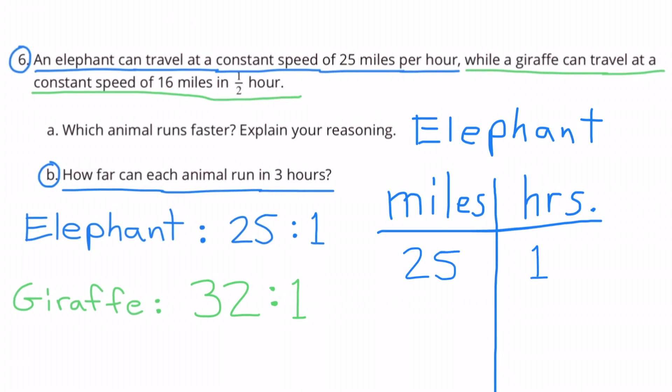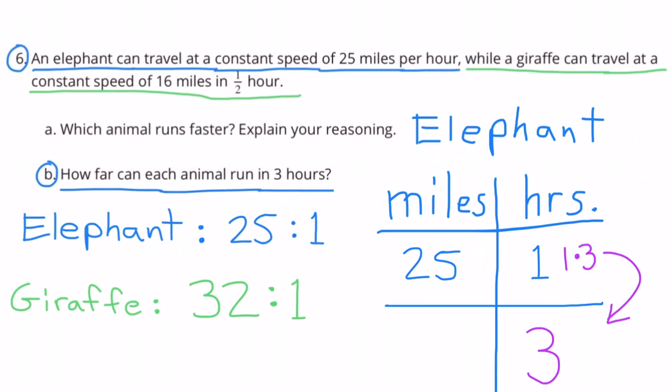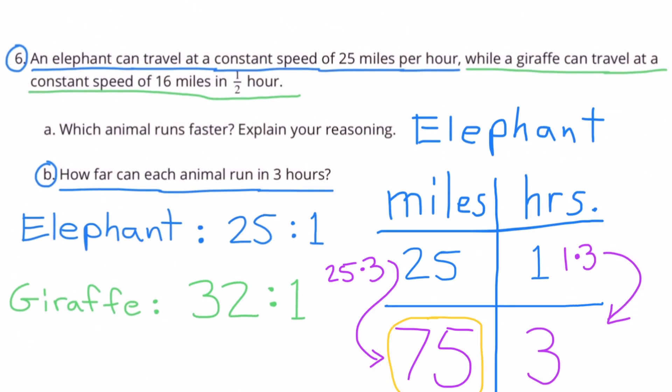The information says that the elephant travels twenty-five miles in one hour. To find out how far the elephant travels in three hours, I'll have to multiply one times three to make three hours. And I also need to multiply the number of miles by three. Twenty-five miles times three equals seventy-five. So in three hours, the elephant can travel seventy-five miles.